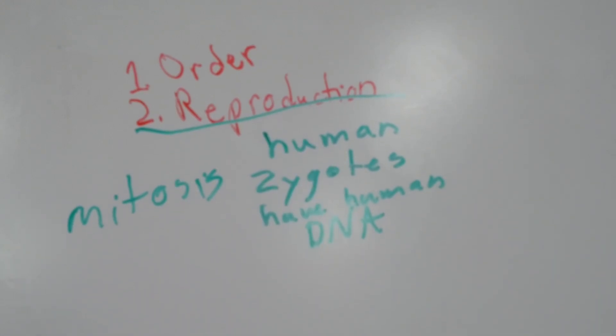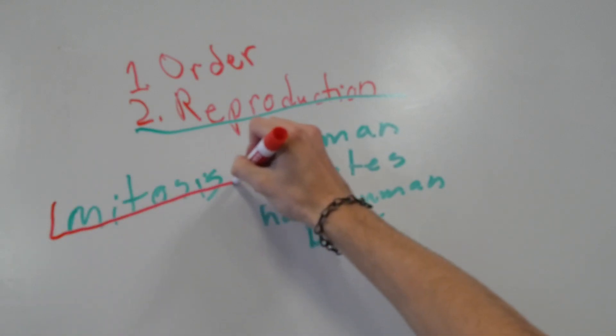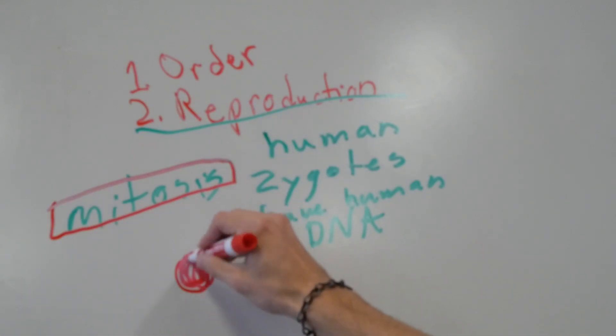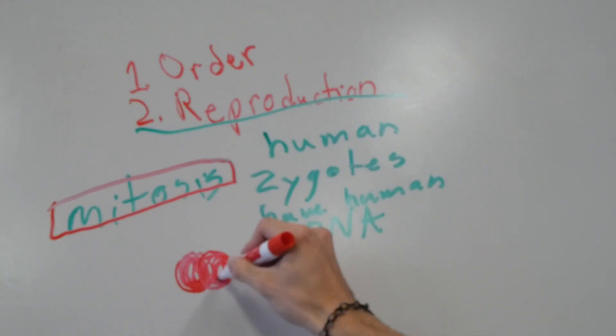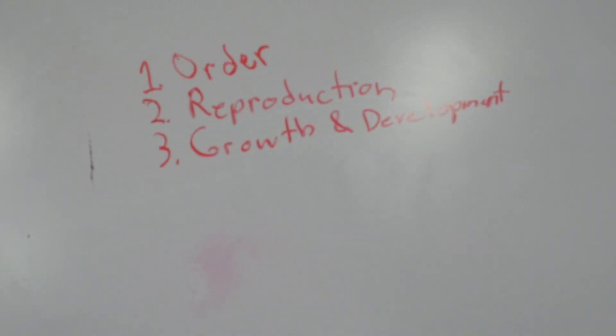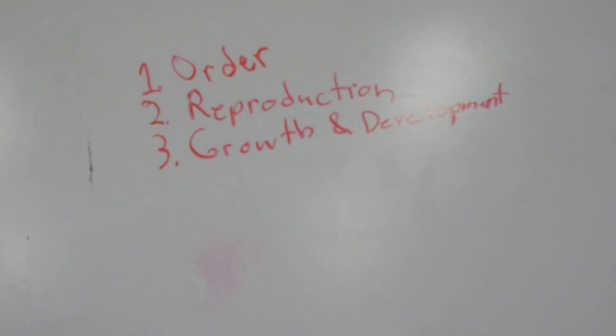As I said before, reproduction does not indicate life on an individual level. But I still think it's pretty cool that a newly conceived fetus can still sort of fulfill this criteria in its own special way. The third principle is that of growth and development.